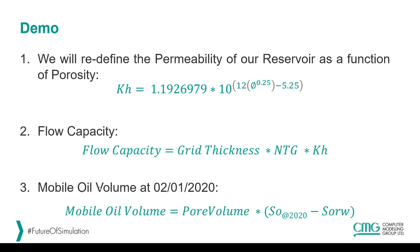For our third example, we will be calculating the mobile oil volume at the end of our history match. The mobile oil volume is a simple calculation: the pore volume times the oil saturation at that date, minus the residual oil saturation to water. This displays how much mobile oil is left at the end of the history match.